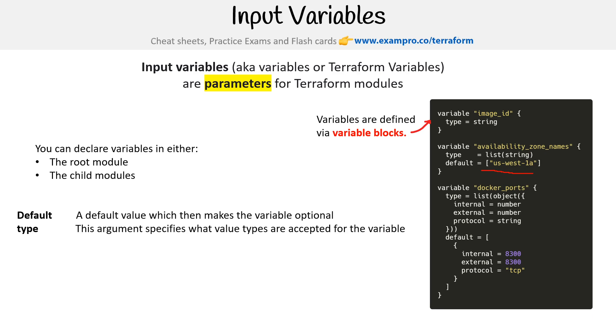For type, this is an argument that specifies the value types that are accepted for the variable. In this case up here, we can see string, and this one is a list.